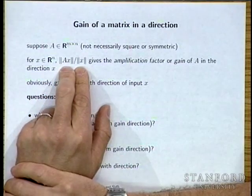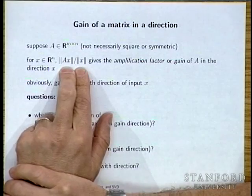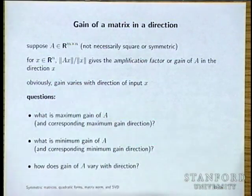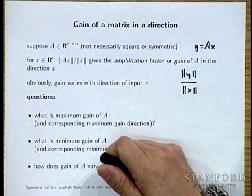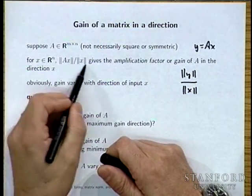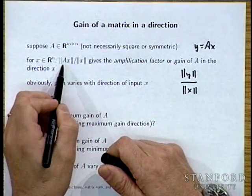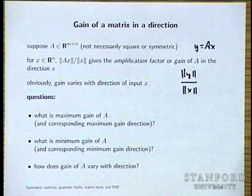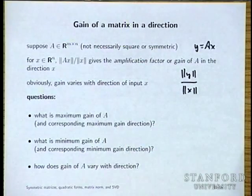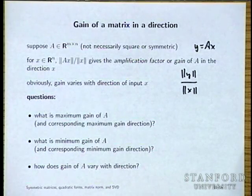We define the amplification factor, or gain, of matrix A in direction x as norm(Ax) / norm(x). This measures how big the output is relative to the input. Scaling x by any constant doesn't change this ratio, so the gain is really a function of direction, not of the magnitude of x.